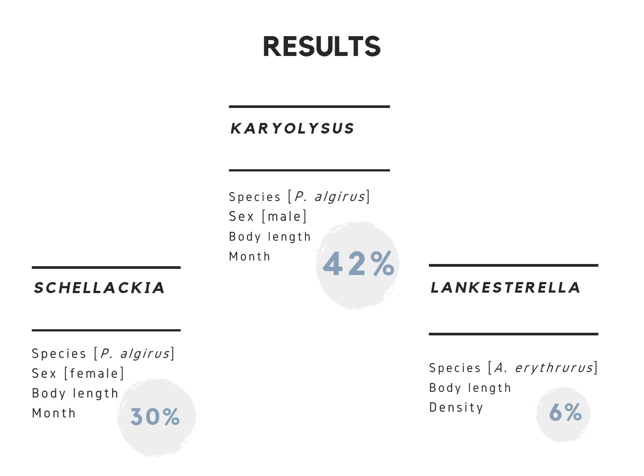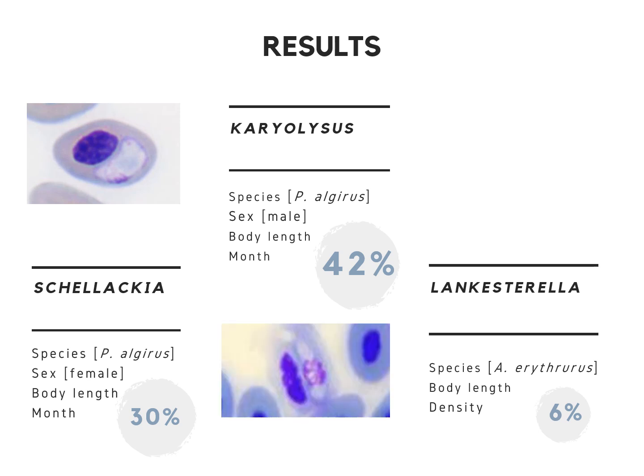The intensity of infection of Schellackia was explained by the sex of the host, where females had significantly higher intensity of infection than male hosts. Lizards with longer body size also had higher infections, and the effect of the month was also significant. For Haemolivia, intensity was also explained by sex, body length, and month; however, males had more parasites than females.